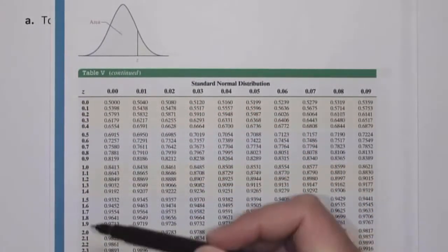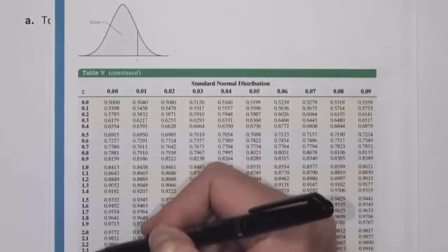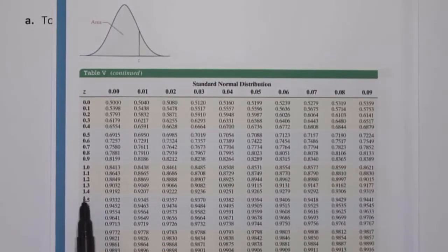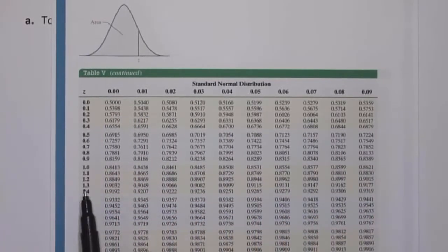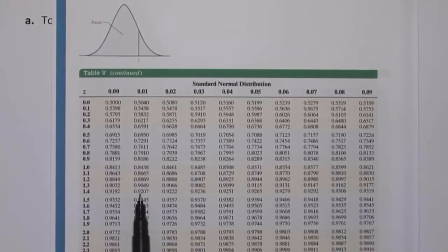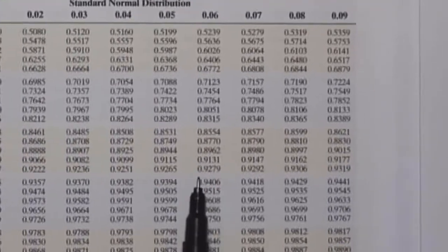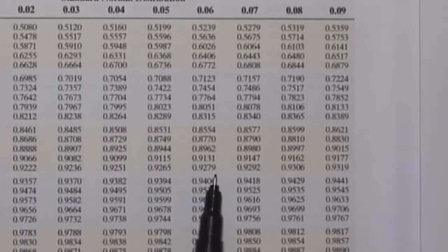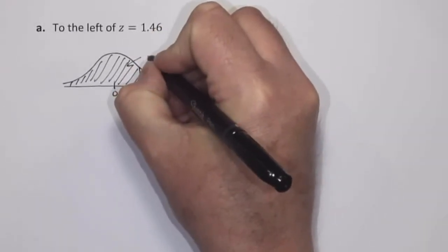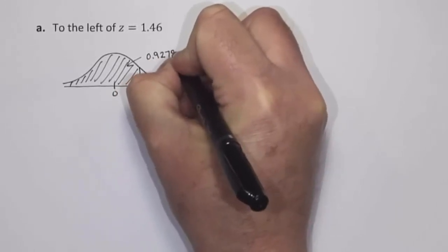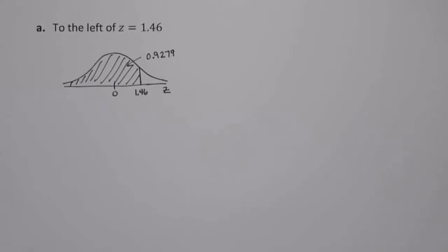Bringing in the table — the z scores are listed in the far left column. Here is a z score of 1.4, and I find the second decimal place using the columns. So for 1.46, I go to row 1.4 and move across to column 6. The value I'm seeing is the area to the left of 1.46 under the standard normal curve. That area is 0.9279. So the shaded area to the left of z equals 1.46 is 0.9279.